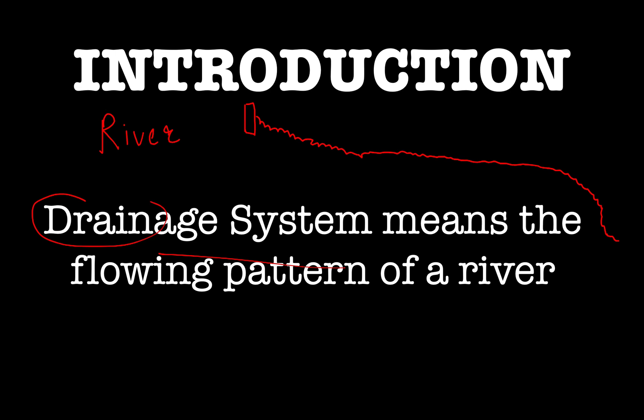In order to understand anything, it is most important that you break down the words. Drain means to flow out, so drainage means something is flowing, and system means how that thing is flowing. So a river drainage system or drainage pattern means how that river is flowing — from a glacier or hilltop, ultimately merging into a water body — what is the course of its flow.